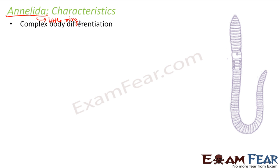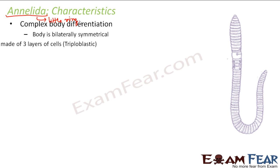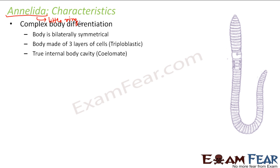They also have complex body differentiation. The complexity is not going to decrease — it will keep on increasing as we go ahead. The body is bilaterally symmetrical and made up of three layers of cells — triploblastic — because we have already crossed cellular, tissue, and organ levels of organization. So one layer is for the outer lining, one for inner lining, and the third for making organs. A true internal body cavity is present and that is why they are known as coelomate. This means the cavity is actually surrounded by a layer of tissue, and in that cavity the true organs can be packaged.